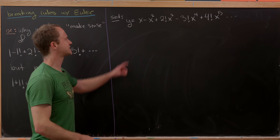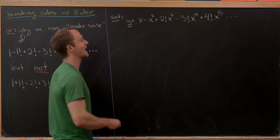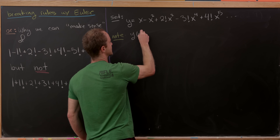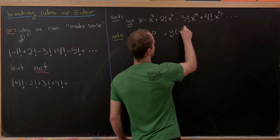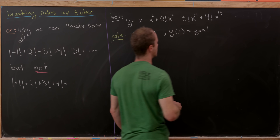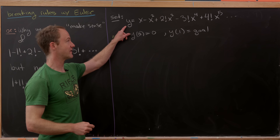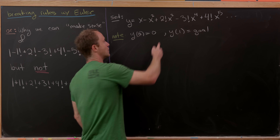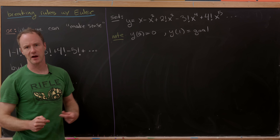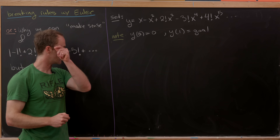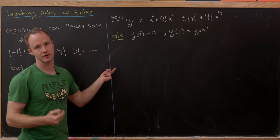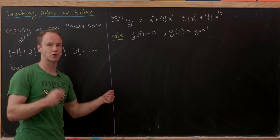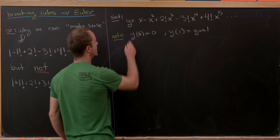Why did we start at x instead of at a constant? Well, notice that y of zero is equal to zero, and y evaluated at one is what I'll call our goal. Also, if we take the derivative, that builds these factorials into the next factorial — the three drops down, and the two factorial becomes a three factorial, extending on and on. So we have y(0) = 0, y(1) is our goal, and we've got this nice structure with the factorial and the derivative.